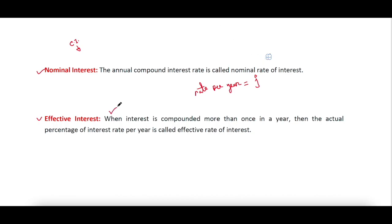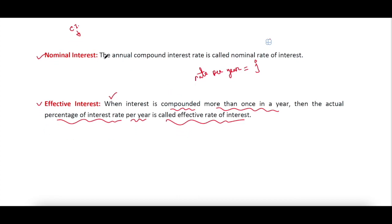When interest is calculated once in a year, the nominal interest rate and effective interest rate are the same. However, when interest is calculated more than once in a year — when interest is compounded more than once in a year — then the actual percent of interest rate per year is called the effective rate of interest. So when interest is calculated more than once in a year, the actual interest in a year is the effective interest.